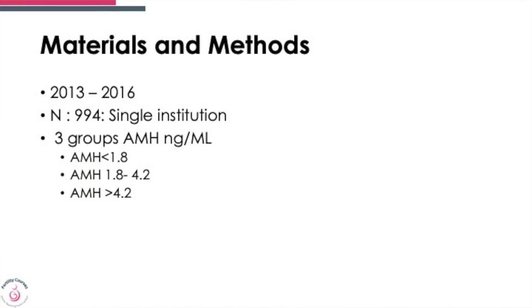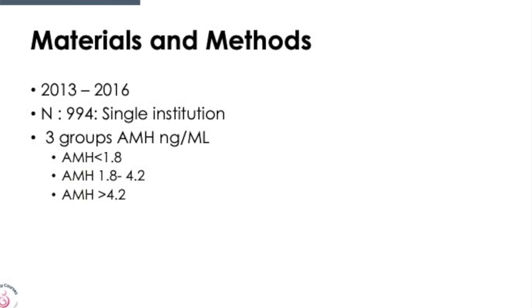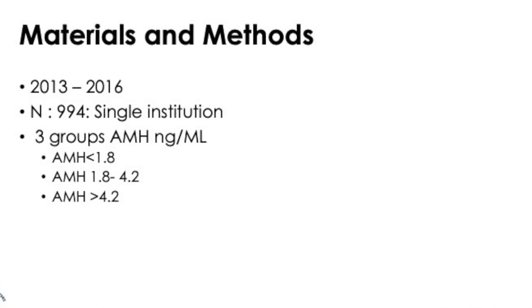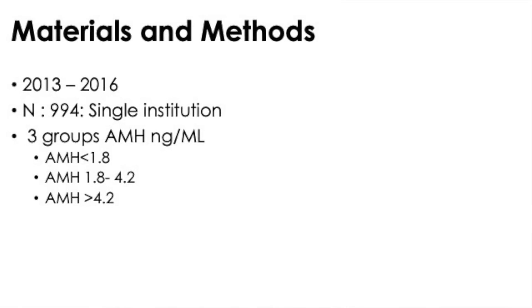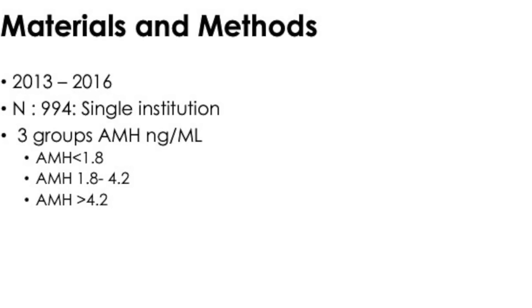So what did they do? From 2013 to 2016, 994 patients in a single institution, classified by AMH in nanograms per ml into three groups: AMH less than 1.8 ng/ml, AMH 1.8 to 4.2 ng/ml, and AMH greater than 4.2 ng/ml. The third group represents PCO patients.